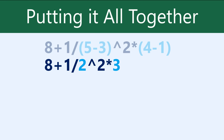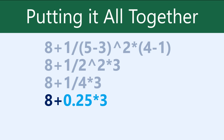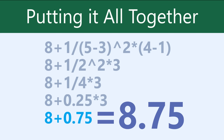Next, we'll look to see if there are any exponents in this formula. There is one: 2 to the second power. When we calculate it, it becomes 4. Next, we'll do the multiplication and division, going from left to right. And now all that's left is addition. And that gives us our answer, which is 8.75.